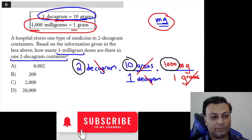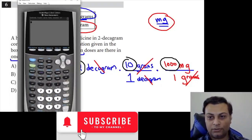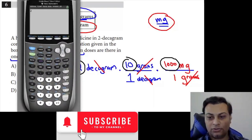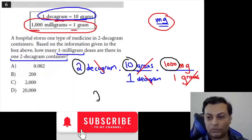So we end up doing, let me grab that real quick, two times ten times a thousand. So the answer is twenty thousand, twenty thousand, which is option D.